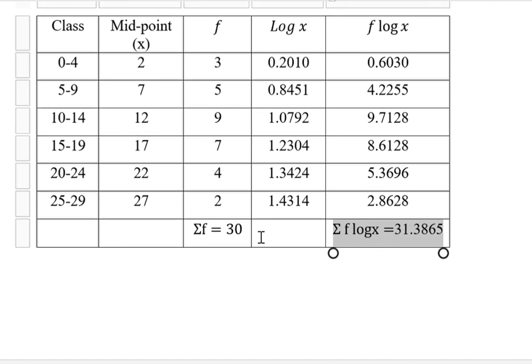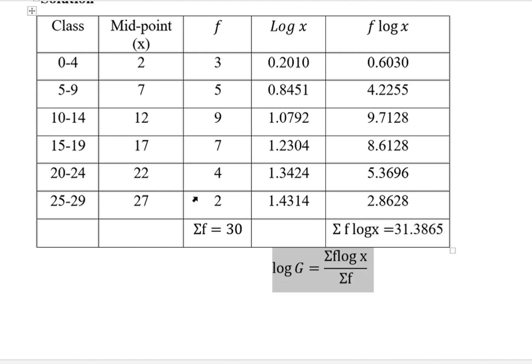Now, with these two totals, we can calculate the weighted geometric mean or the geometric mean for grouped data. And so we shall say logarithm for the geometric mean is given by summation f log x, which is this total here, divided by summation of f, which is this total here. And that is equal to 1.0462.